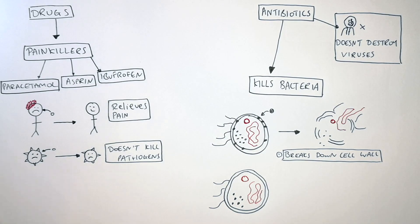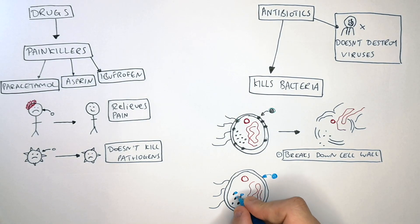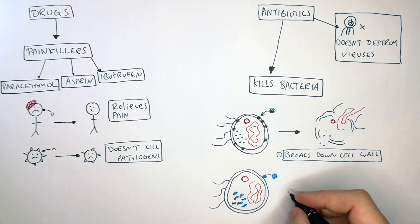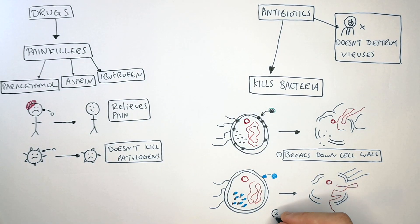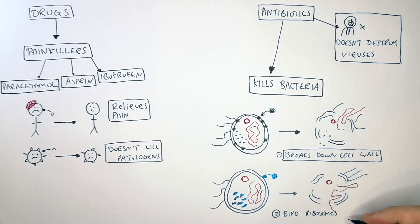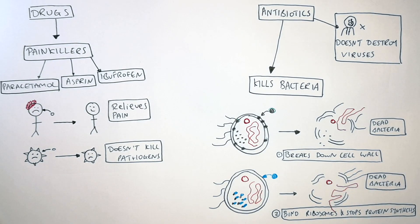Antibiotics can also work by entering the bacteria and binding onto the ribosomes of bacteria so they do not produce proteins. This will then kill the bacteria if they cannot produce proteins.